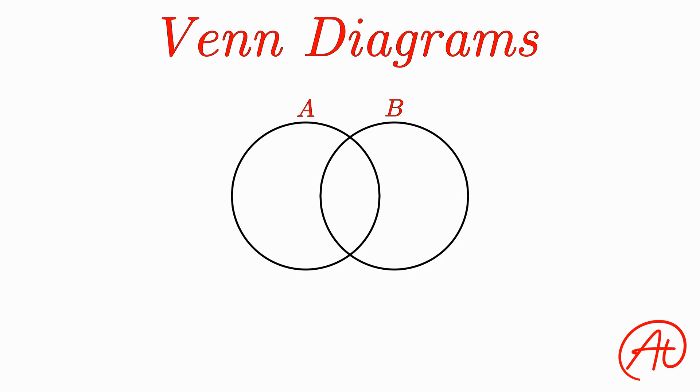But then what about this overlapping region here? Well, this is known as the intersection of A and B, written like this. Now basically what this region represents is the probability of both A and B occurring together. For example, if we were randomly selecting a playing card, we might have A be picking a jack, and B being picking a heart.